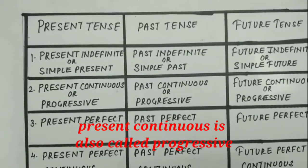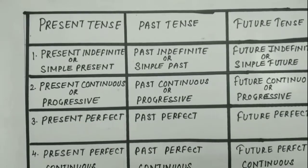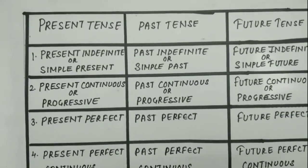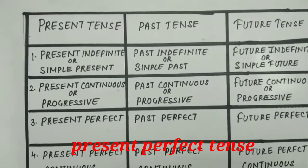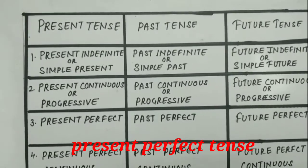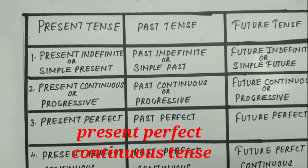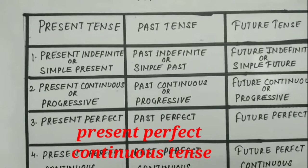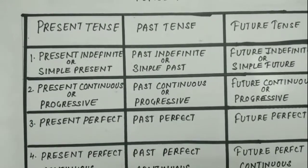Second tense hain present continuous tense, jisko ki progressive tense bhi kehate hain. Third hain present perfect tense. Aur fourth hain present perfect continuous tense. Ye to present tense ke chare parts hain.